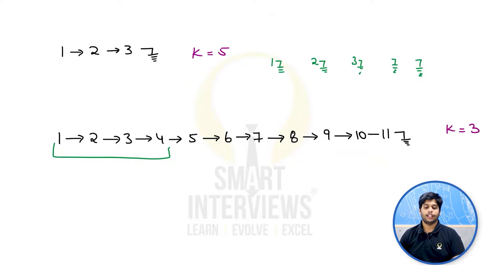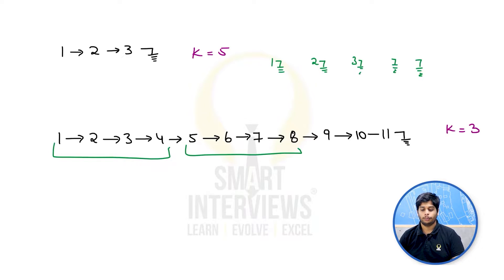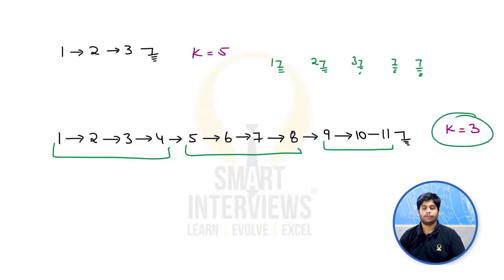So the correct split would be: the first part contains 1, 2, 3, 4; the second part contains 5, 6, 7, 8; and the third part contains 9, 10, 11. We are dividing the list into k parts, which is 3 here.